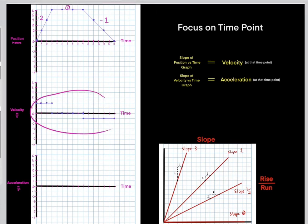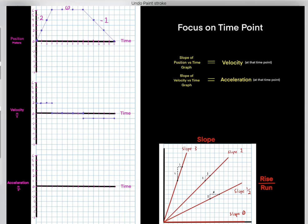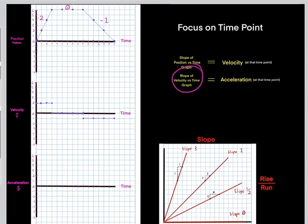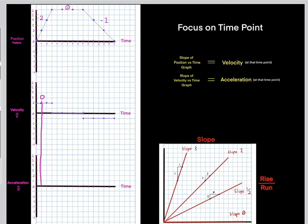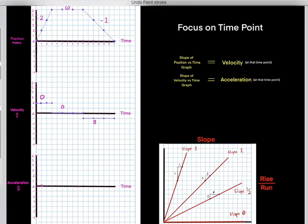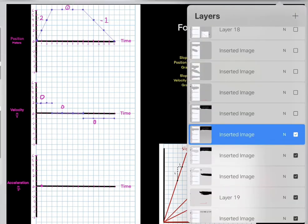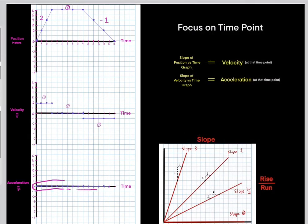Now that we know the velocity versus time graph, how do we go to the acceleration versus time graph? At time one second, the slope of the velocity versus time graph is zero, so the numerical value of the acceleration is zero. The slope at each of these time instances is zero, so the acceleration versus time graph is all at zero.